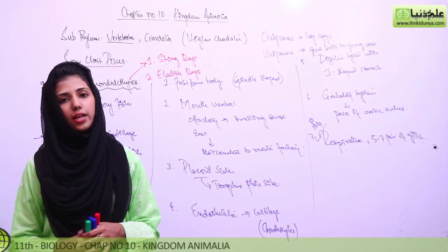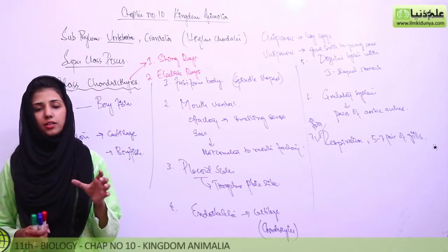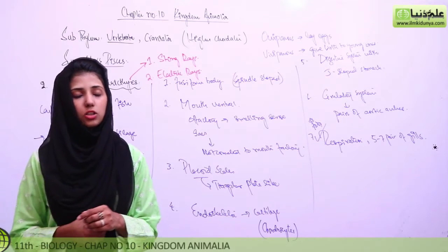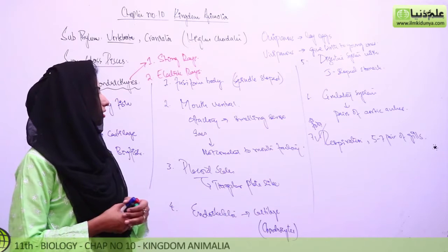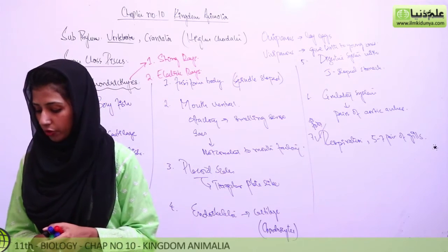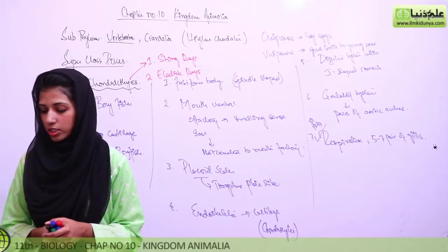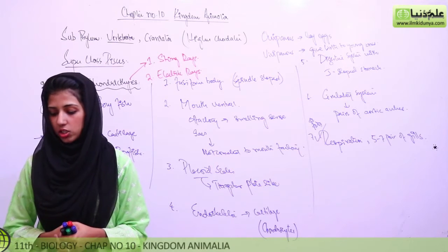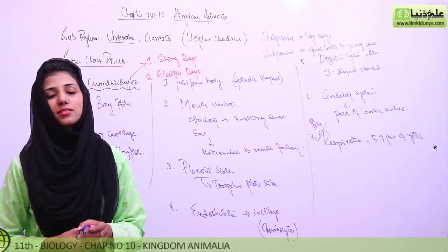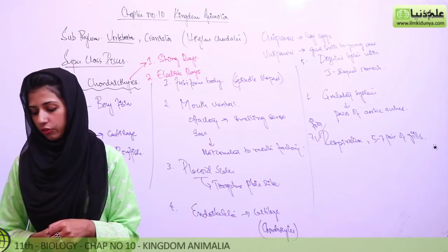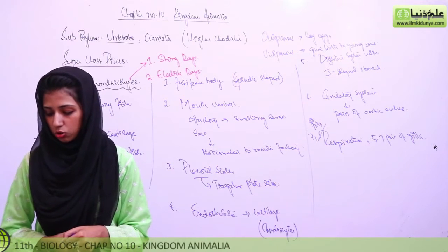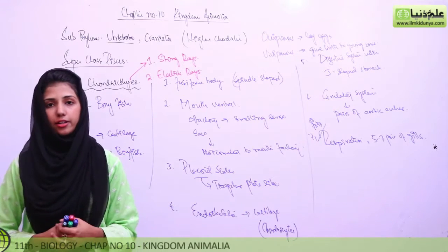Economic importance: sharks and fish are used as food by humans. Commercially, shark liver oil is used in medicines and as a source of vitamins A and D. Shark skin leather is also used for making various articles.